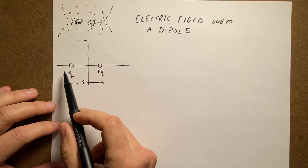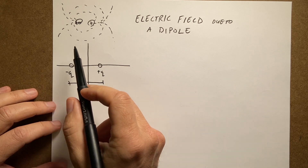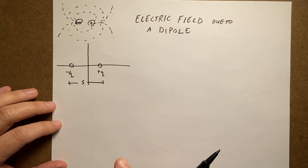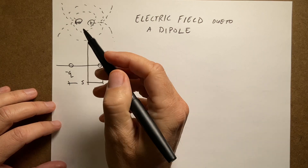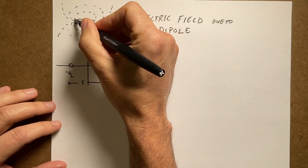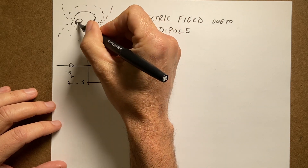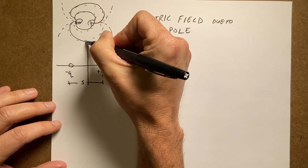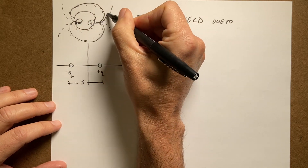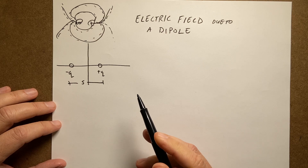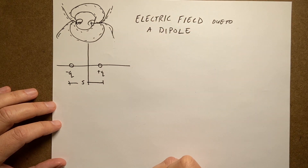One of the cool things is this dipole has no charge overall — the net charge is zero, but it still makes an electric field. Here is the common field map you see for a dipole, and it looks like the field due to a bar magnet because that's pretty close to a dipole too.